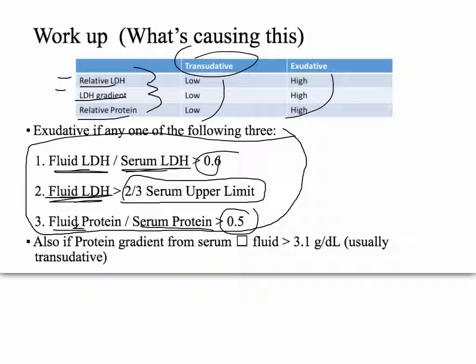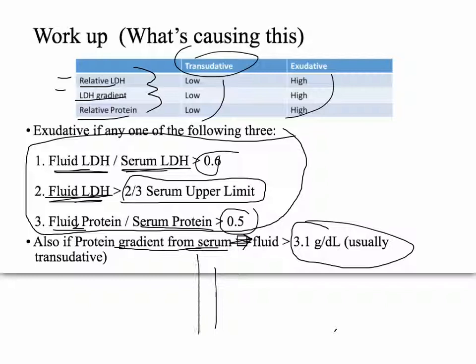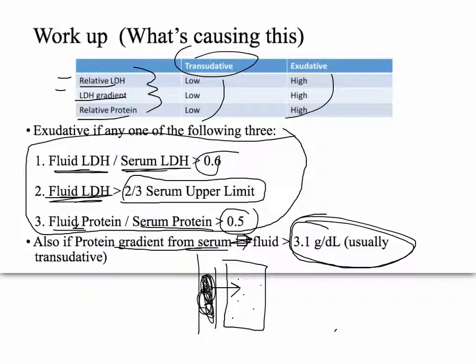Harrison's mentions that if the protein gradient from the serum to the fluid is greater than 3.1 grams per deciliter, it's usually transudative. Think of it this way: if there's a lot of protein in the blood vessel and just a tiny bit in the serous fluid, that's a big gradient — meaning it was filtered well. A big change in gradient — 3.1 grams per deciliter — means it's been filtered really well, so it's transudative. Note this rule is only listed in one source, so take it with a grain of salt.